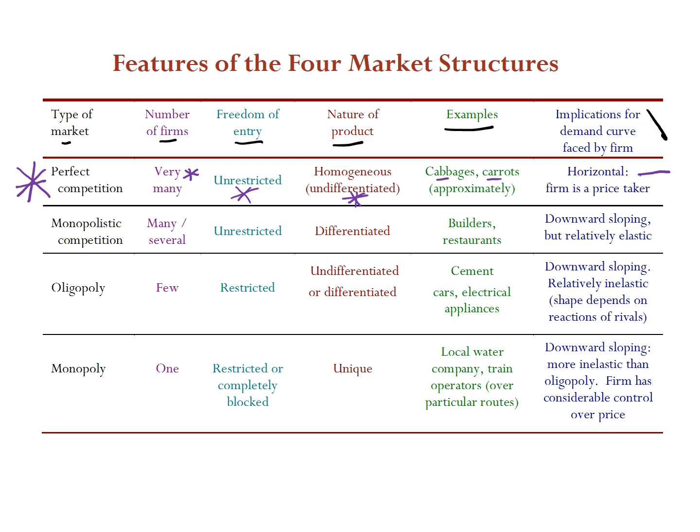The second type of market is monopolistic competition — not exactly a monopoly, but not perfect competition either. There are several firms, not very many but not just one or a few. Think of the restaurant business: if you walk along the high street one evening looking for a curry, you'll find many different restaurants. Entry is also unrestricted — anyone can start a firm once they get a licence.